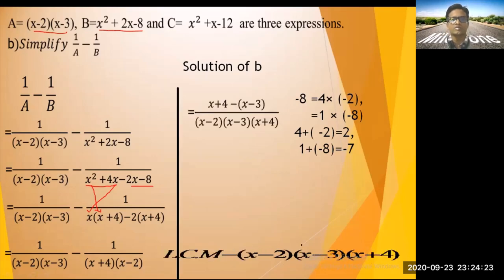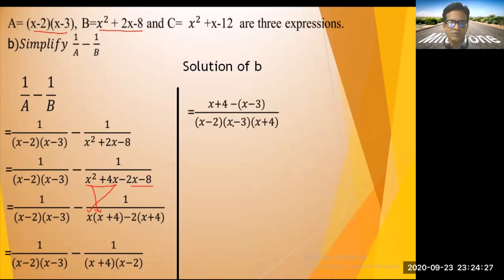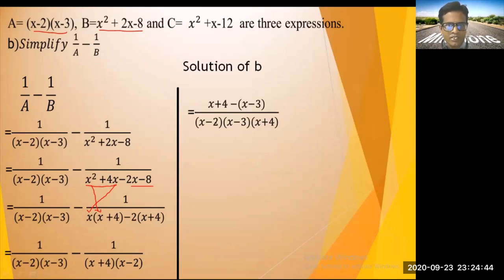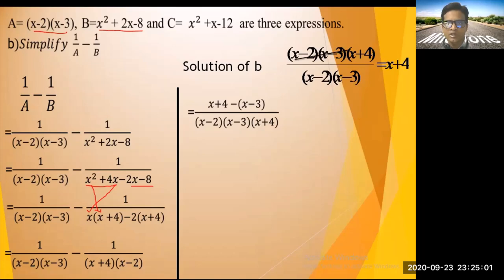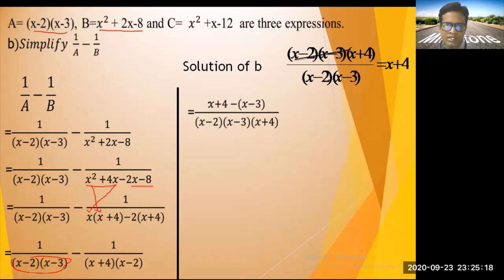Now rewrite with the LCM as denominator. For the first fraction: LCM ÷ (x - 2)(x - 3) = (x + 4). Multiply numerator and denominator by (x + 4). For the second fraction: LCM ÷ (x + 4)(x - 2) = (x - 3). Multiply by (x - 3).